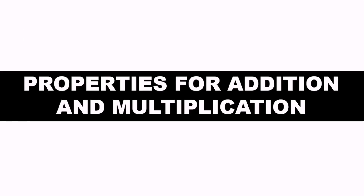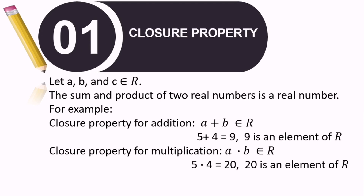Now, let's proceed with the properties for addition and multiplication. I will start with the closure property. Let A, B, and C be elements of real numbers — that R represents real numbers. The sum and product of two real numbers is a real number. For closure property for addition: A plus B is an element of real numbers. For example, 5 plus 4 equals 9, and 9 is an element of real numbers. For closure property for multiplication: A times B is an element of real numbers. For example, 5 times 4 equals 20, and 20 is an element of real numbers.